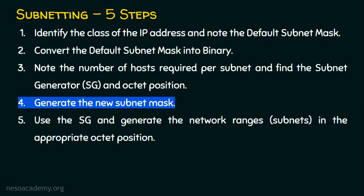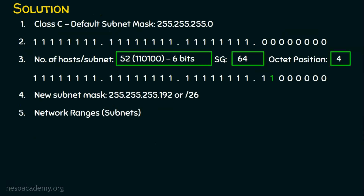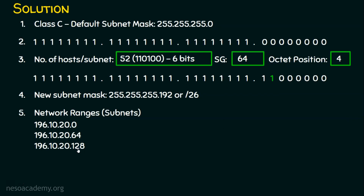Step five: generate the network ranges, also called subnets. The IP address given is 196.10.20.0, and the subnet generator is applied to the fourth octet. The first subnet starts at .0; adding the subnet generator 64 gives 196.10.20.64 as the start of the second subnet. Adding 64 again gives .128 for the third subnet, and adding 64 once more gives .192 for the fourth subnet. We have generated four subnetworks.